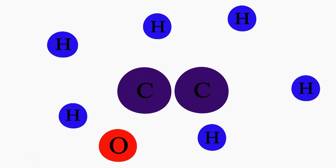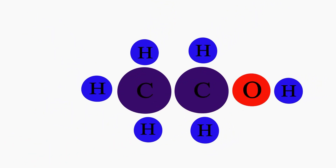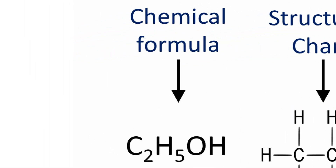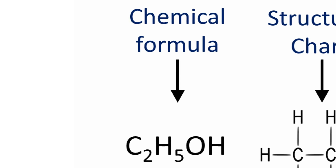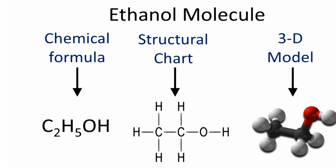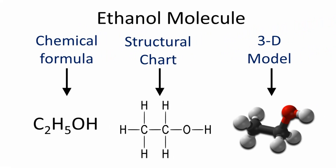Ethanol can also be used to make biodiesel and is the second molecule model we will construct. It is a straight chain hydrocarbon with a molecular formula C2H5OH. This type of alcohol is also called grain alcohol and is found in all alcoholic drinks. It can also be blended with gasoline as an octane booster and fuel extender for all gas powered cars and trucks.